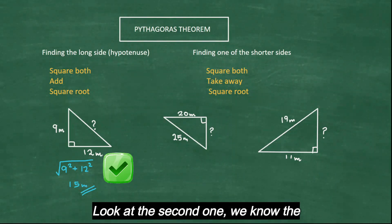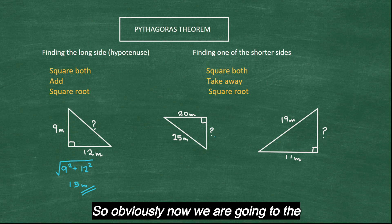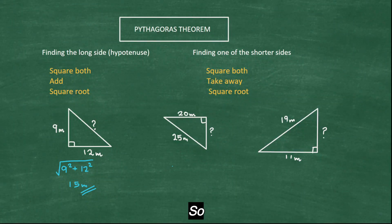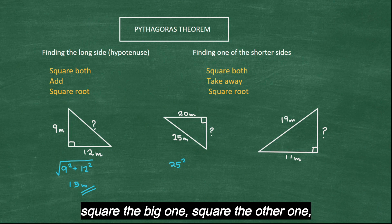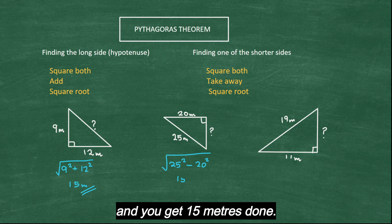Look at the second one. We know the hypotenuse, the longest side. We are finding one of the shorter sides. So obviously now we are going to the second one on the right hand side. So square the big one, square the other one, take away and root. And you get 15 meters. Done.